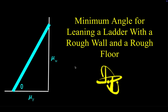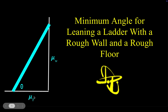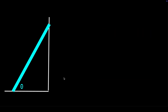All right, my friends, we are going to take a look at the minimum angle that you can lean a ladder against a rough wall with a rough floor. The coefficient of friction of the wall is going to be mu_w and the coefficient of static friction of the floor will be mu_f. So here's our ladder leaning up against the wall at some angle theta.